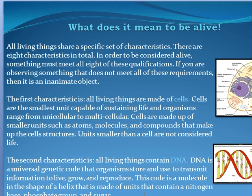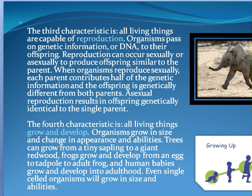So far: all living things are made of cells, and all living things contain DNA. The third characteristic is reproduction. Organisms need to be able to reproduce and pass on their genetic information in DNA to their offspring. This can occur sexually or asexually. In asexual reproduction, because there's no mating of male and female, the offspring are generally genetically identical to that single parent, but there is still a passing on of genetic information.